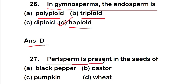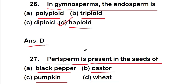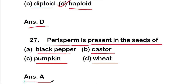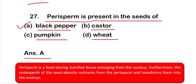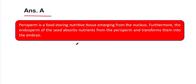Question 27: perisperm is present in the seeds of option A: black pepper; option B: castor; option C: pumpkin; or option D: wheat. The right answer is option A — black pepper. Perisperm is a food-storing nutritive tissue emerging from the nucleus. The endosperm of the seed absorbs nutrients from the perisperm and transfers them to the embryo.